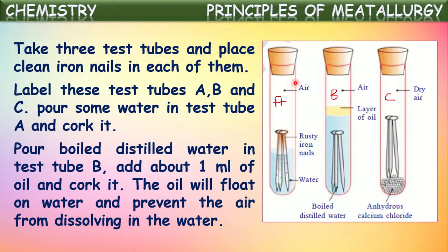Now in the second test tube, pour some boiled water. Boiled distilled water does not contain any gases in it — when water is boiled, all the dissolved gases are evaporated off. That boiled water is poured into test tube B, and then about 1 ml of oil is added on top. This oil floats on the water, acts like a blanket, and won't allow any dissolution of gases into the water.